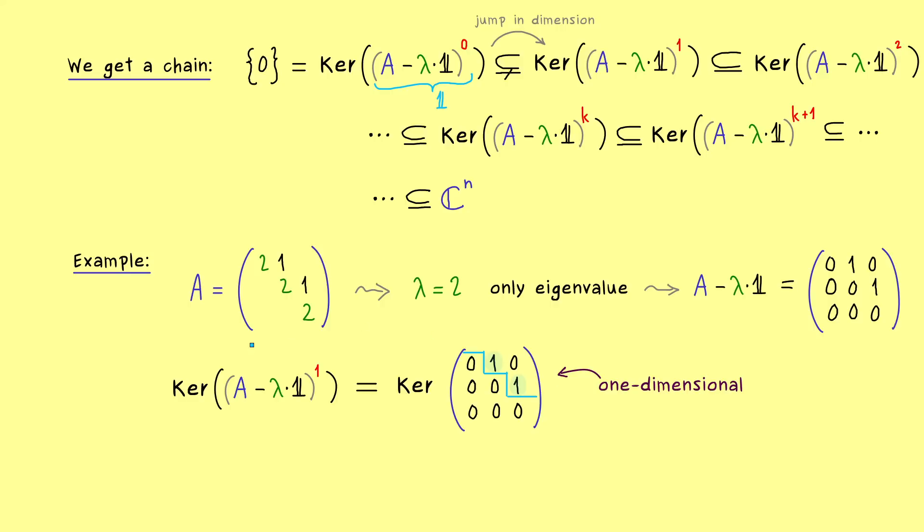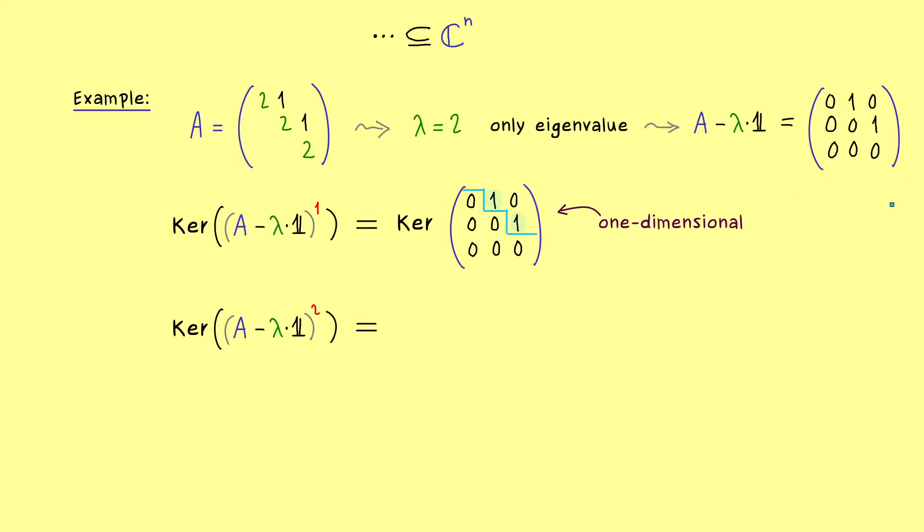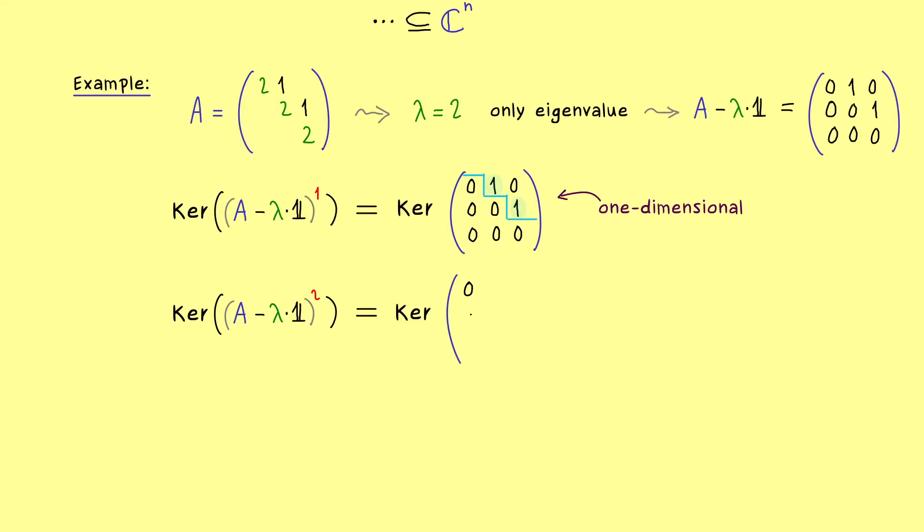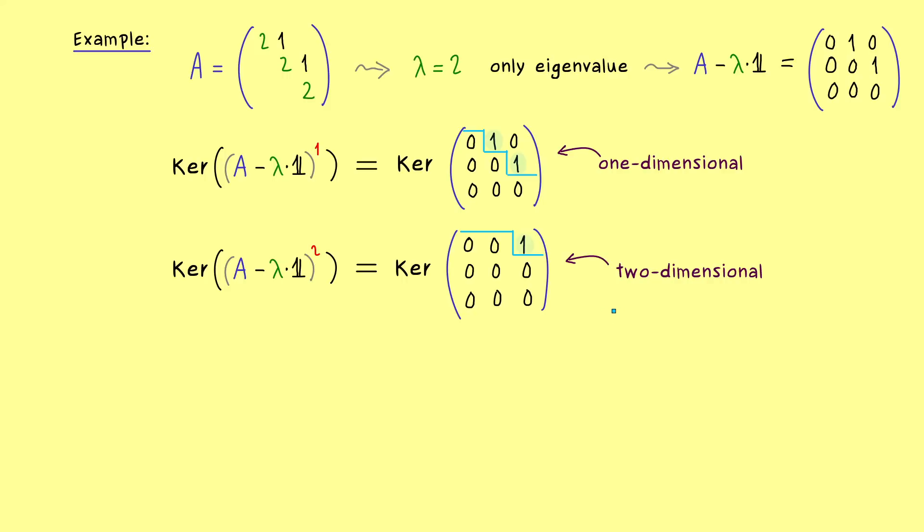And now it gets interesting, let's see if in the next step the dimension is increased or not. Hence now we have to do the matrix multiplication of this matrix with itself. And then we see what comes out are a lot of zeros and just one one. And we find it in the top right corner. So again we don't have to do any row operations because the row echelon form is already there. And there we see we only have one pivot, so two free variables. And this immediately implies that our generalized eigenspace here is two-dimensional. So we actually have a jump in the dimension and we can go to the next one.